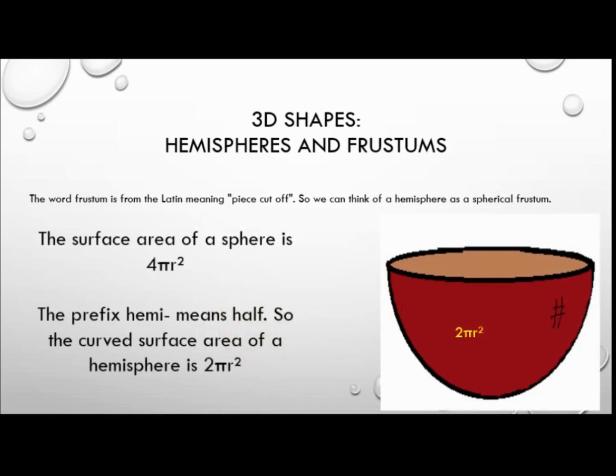The surface area of a sphere is 4πr². The prefix 'hemi' means half. So the curved surface area of a hemisphere is just 4πr² divided by 2, which is 2πr².